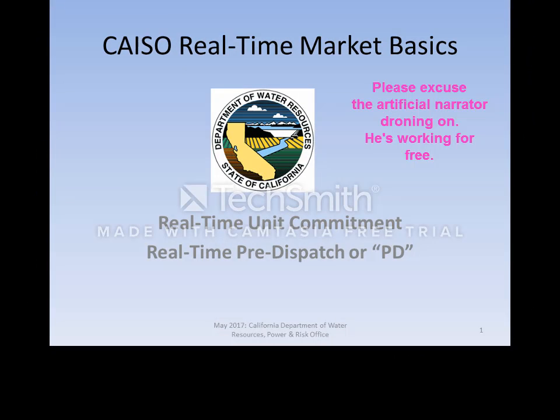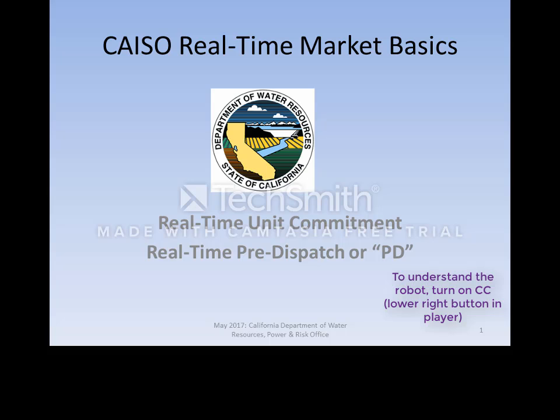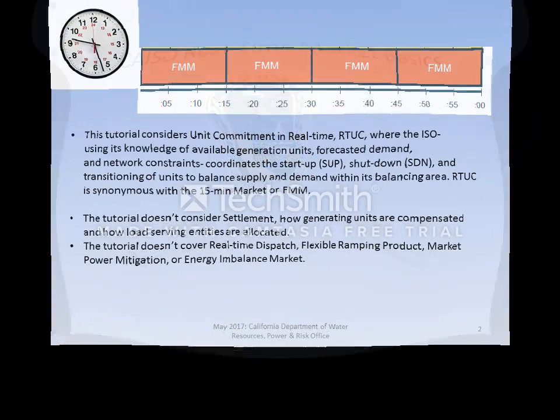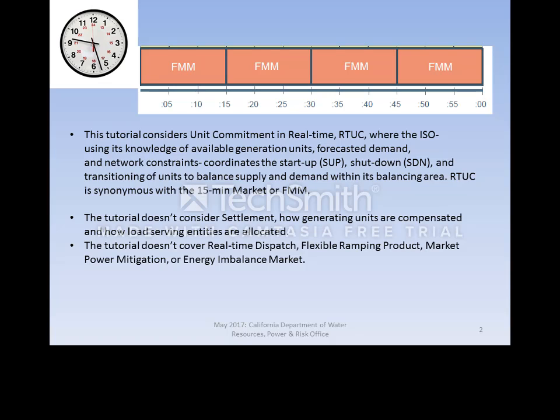This short tutorial concerns the economic dispatch of generation units on a time horizon of a few minutes to over 100 minutes. The tutorial is not intended to cover settlements, which involves payment to generators by load. It also does not cover the multi-state energy imbalance market or EAIM. We are concerned with 15-minute processes within the California Independent System Operator balancing authority inside the state of California. Section 34 of the CAISO tariff and Section 7 of the CAISO Business Practice Manual for market operations detail the processes of the CAISO real-time market.